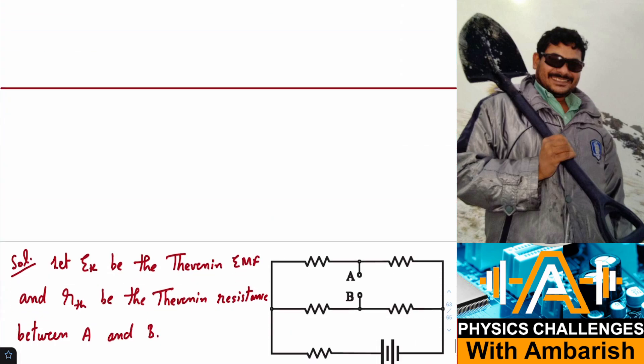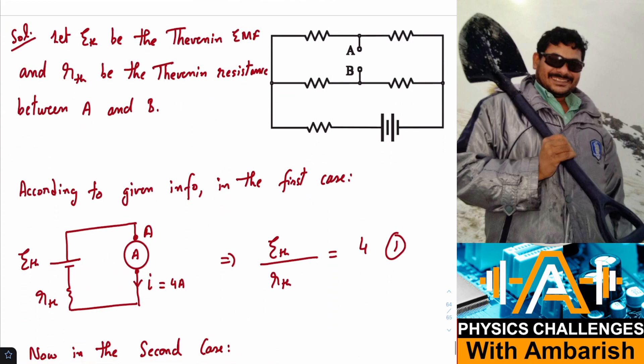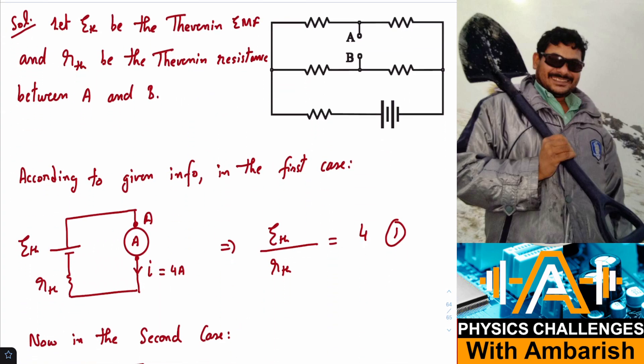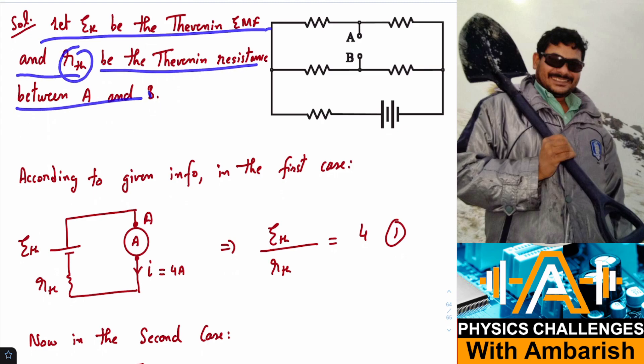As I mentioned, this is based on simple application of Thevenin's theorem. If you want a proof of Thevenin's theorem, I'll be giving a link to the proof in the description. I am going to use Thevenin's theorem directly. Let E_TH be the Thevenin EMF and R_TH be the Thevenin resistance between A and B.